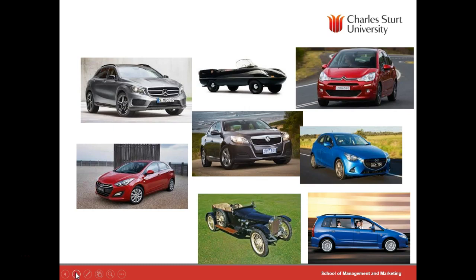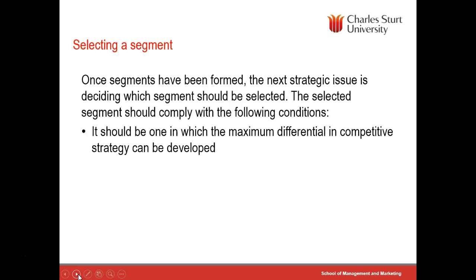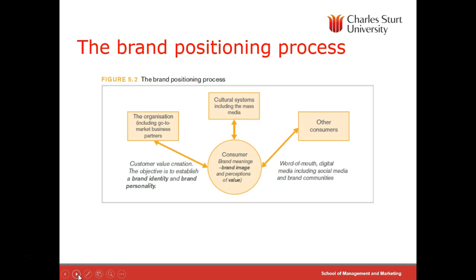Once segments have been formed, the next issue is to decide which segment should be selected. It should align with a differential in the competitive strategy — some sort of advantage we have. Targeting a luxury segment may not be a good strategy if we haven't got anything differential. The segment should be capable of being isolated so the competitive advantage can be preserved, and it must be valid even though it can be imitated later. The next step is how we position the brand itself.